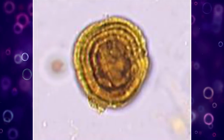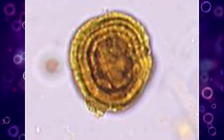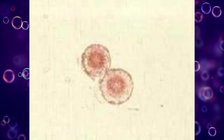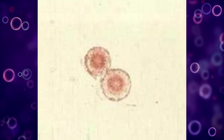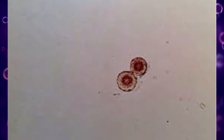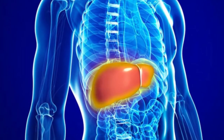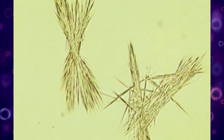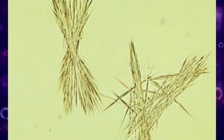Leucine crystals are yellowish-brown spheres with concentric circles and radial striations, found in acidic or neutral urine. Leucine crystals may be seen in liver disorders in which amino acid metabolism is impaired.